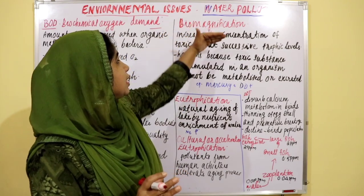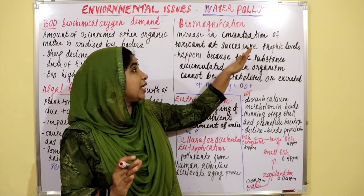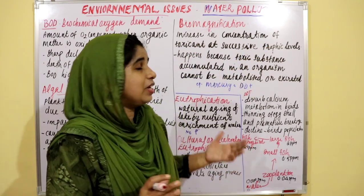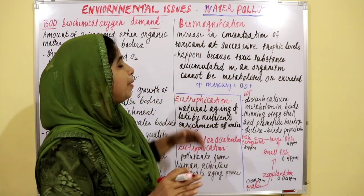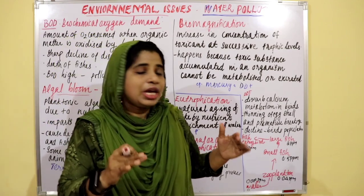Increase in concentration of toxicant at successive higher trophic levels is known as biomagnification.